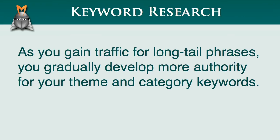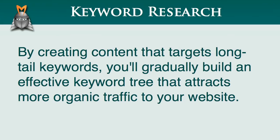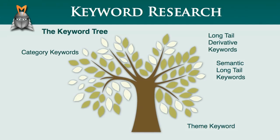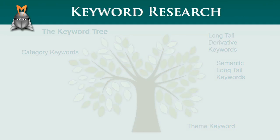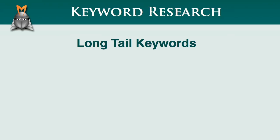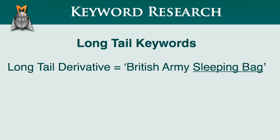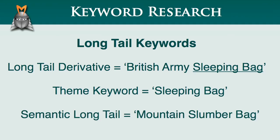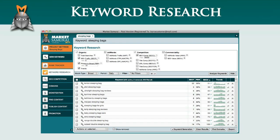I hope you can now see the true power of using Market Samurai to find long-tail derivative and semantic long-tail phrases related to each of your category keywords and your theme keyword. By creating content that targets these keywords, you'll gradually build an effective keyword tree that attracts more and more organic traffic to your website. So just to recap: in this video we looked at the keyword tree, which is a great way to visualize the structure of an effective website. We explored long-tail keywords and found that there are two main types — long-tail derivative keywords, which contain our root phrase, and semantic long-tail keywords, which do not contain our root phrase. And finally, we saw how to find long-tail keywords using Market Samurai by lowering our SEO traffic filter to five.